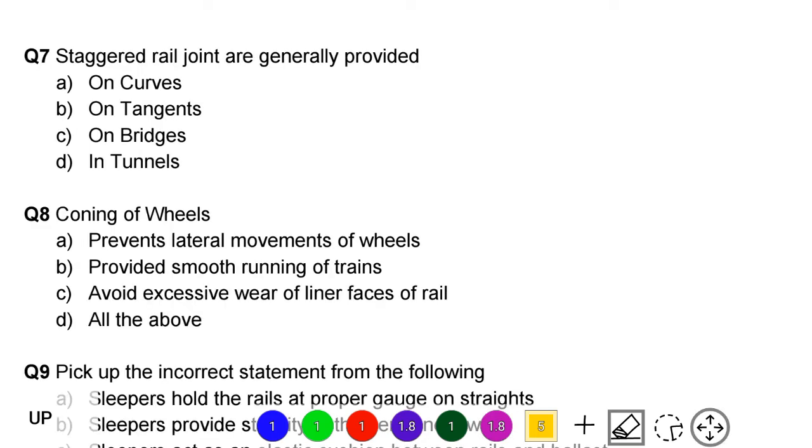Next question: staggered rail joints are generally provided. Option A: on curves. Option B: on tangents. Option C: on bridges. Option D: in tunnels. The correct answer is option A, on curves.